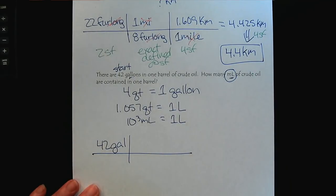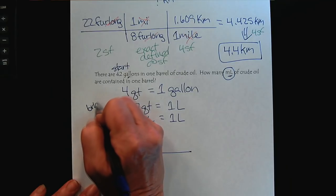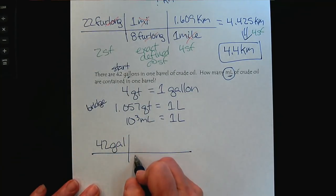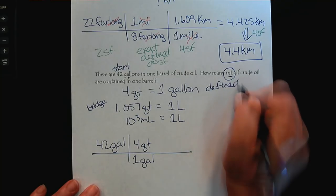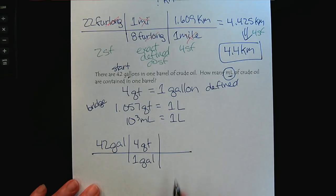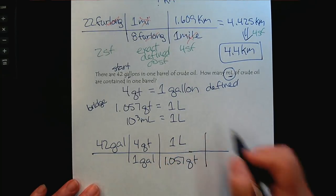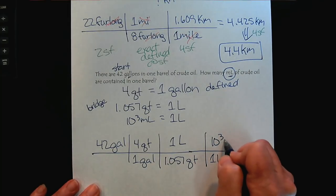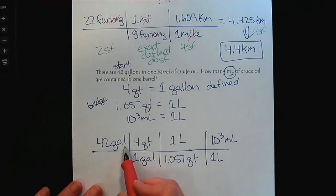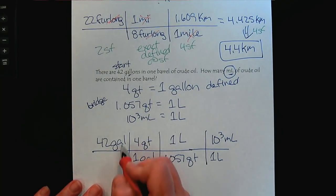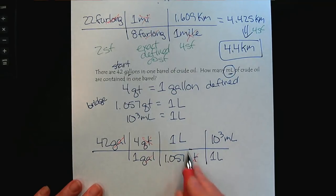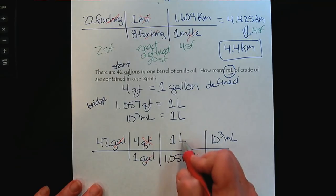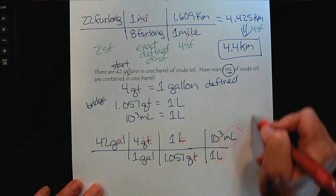And we're trying to get to milliliters. So since we have a bridge here from quarts to liters, I'm going to go ahead and take advantage of the fact that 1 gallon is defined. So this is defined in the English system to 4 quarts. Then we can use our bridge, 1.057 quarts in a liter. And then last but not least, in a liter there are 1,000 milliliters. So we used an English unit conversion to go from gallons to quarts. We used one of our metric English bridges to get from English to metric volume. And then we used a metric conversion to get to milliliters, which the question asked us to solve for.